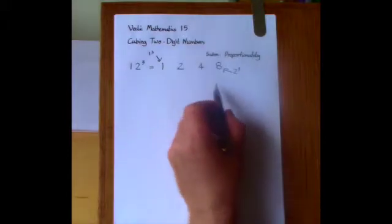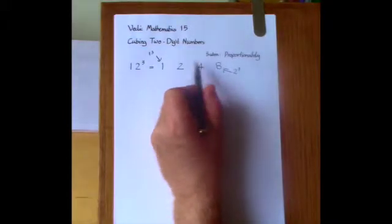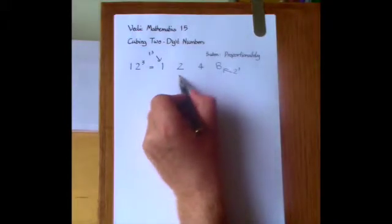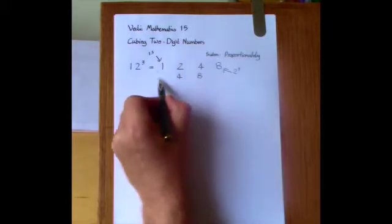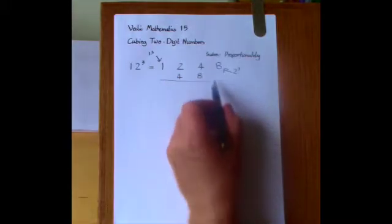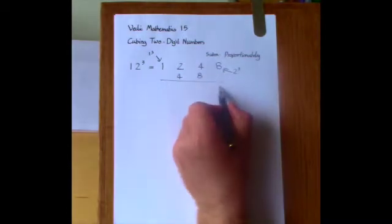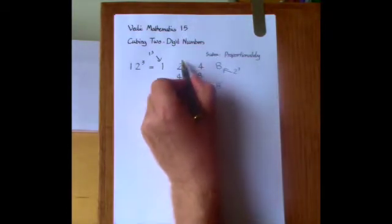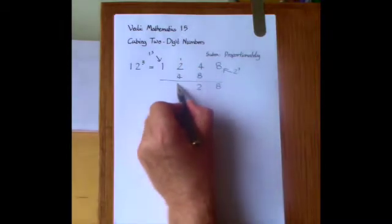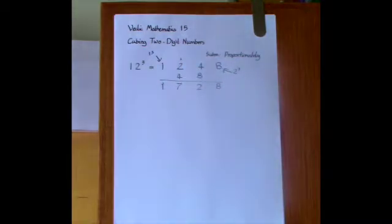The next step is to write down double the middle two numbers, so here we write 4 and here we write 8. And finally we add up all the numbers: 8, that's 12, so that's 2 with 1 to carry. That makes 7 and that makes 1. And it's as easy as that — it's very simple.